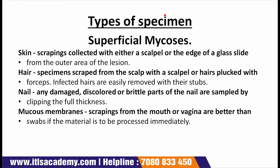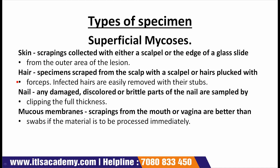Types of specimens: The first is skin. This is collected from the outer area of the lesion using a glass slide. Skin scrapings are sent to the laboratory in folded black paper or any sterile container such as a sputum pot.